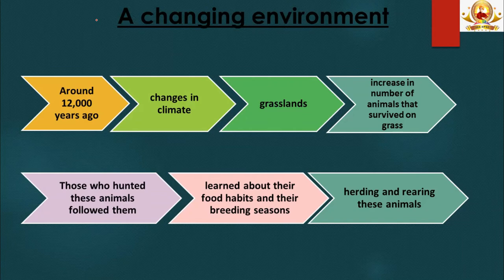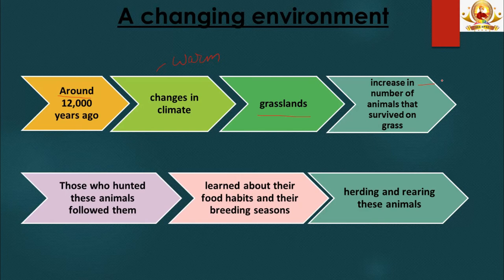Around 12,000 years ago there were major changes in climate, with a shift to relatively warm conditions. In many areas this led to the development of grasslands, which increased the number of animals that survived on grass — like deer, cattle, sheep and antelope. Those who hunted these animals followed them, learning about their food habits and breeding seasons. This likely helped people start thinking about herding and rearing these animals themselves. Fishing also became important during this period.